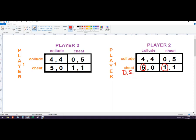Now for player two: if player one colludes, player two will cheat. If player one cheats, player two will also cheat. They also have a dominant strategy. This is the Nash equilibrium, also called the dominant strategies equilibrium.